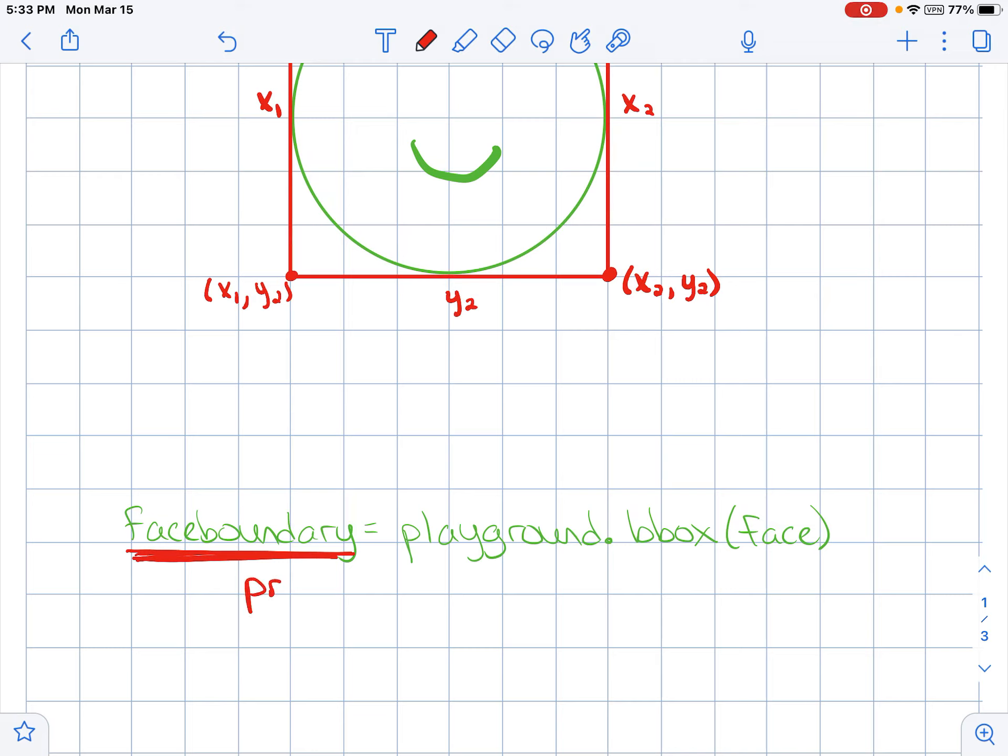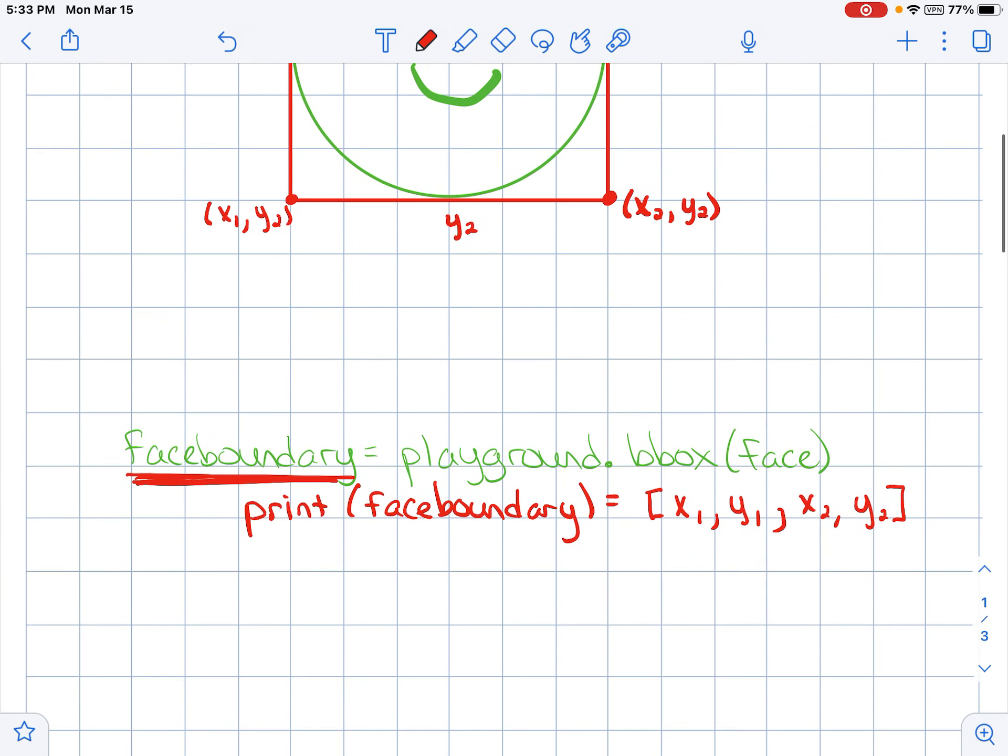That's the command we use in Tkinter. If you were to print face boundary, what happens when you create face boundary is you're creating a list, and in that list is going to be four numbers. If you were to print this you would get four numbers: x1, y1, x2, y2.